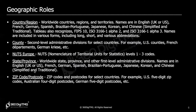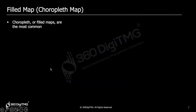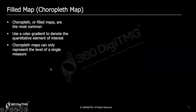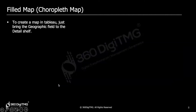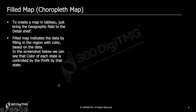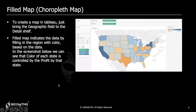Now let's see how to create a geographic map in Tableau. First we will learn about the fill map, also called the choropleth map. It is a map where the area is completely filled with a color indicating some value. The limitation of the fill map is that you can show only one measure, because the information is conveyed through color.